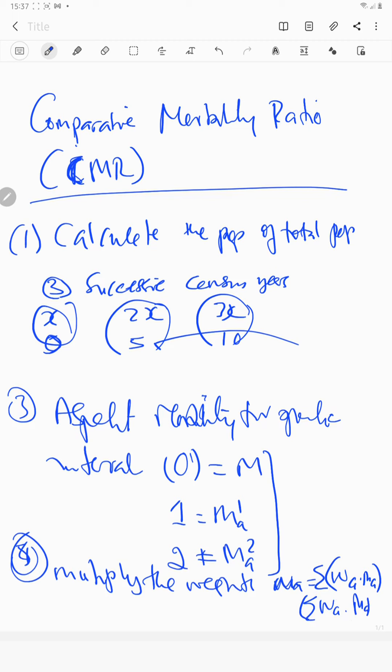You can multiply the weight wa by capital M and sum it. Why do we do this? You are now trying to get the standardized values, and when you get the sum, these are the ones you can now use to calculate CMR, which is given by the formula: summation of wa times ma over summation of wa times capital M.